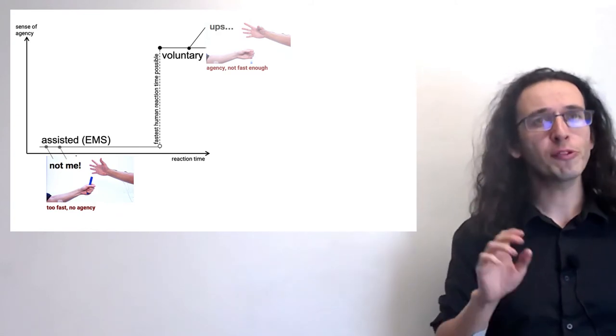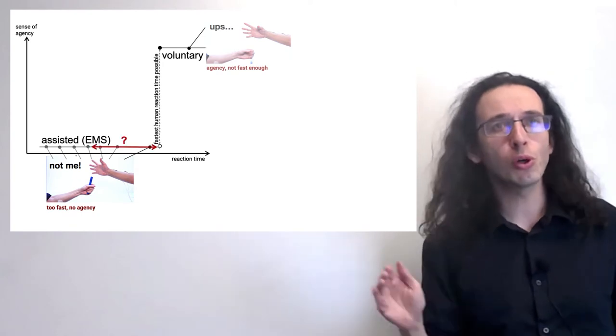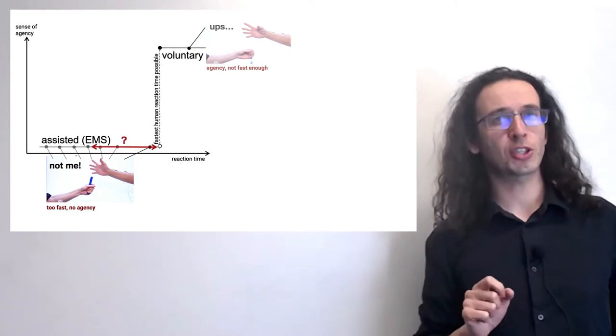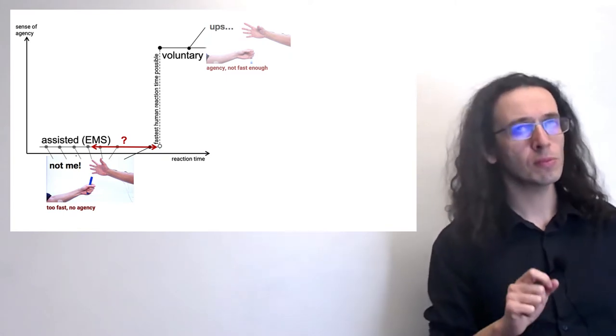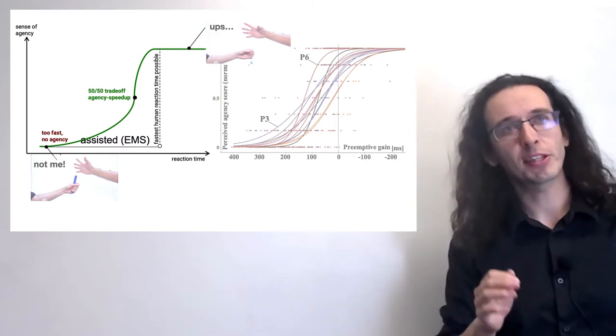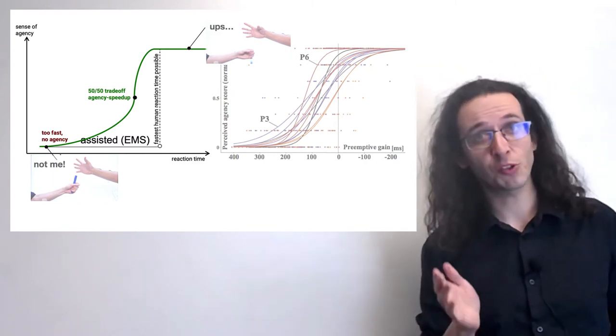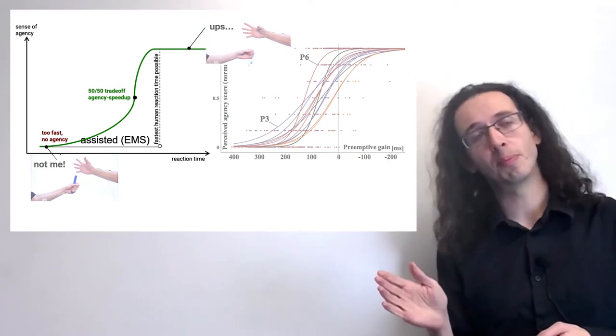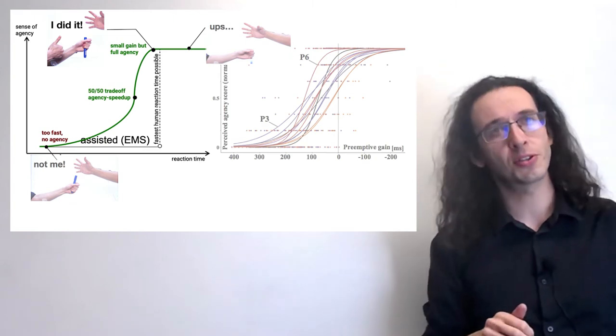But we asked ourselves, what if we keep pushing the muscle stimulation timing closer and closer to your own reaction time? Is this sense of agency always an absolute step response? In our CHI-19 paper, we found out that it is not. In fact, you can find points in this agency curve that allow you to optimize for both agency and speedup, or even points where a very small gain in speedup has virtually no impact on agency.